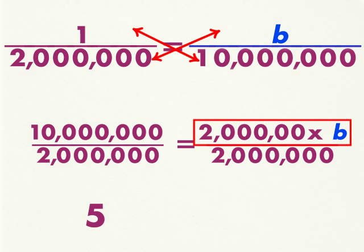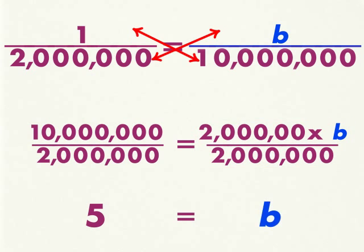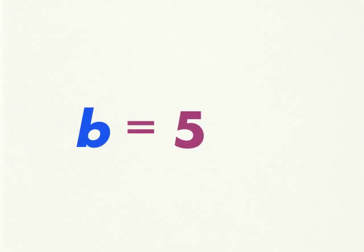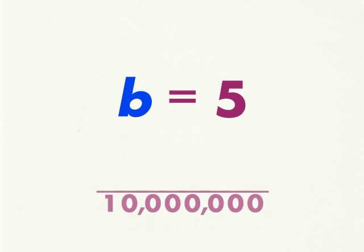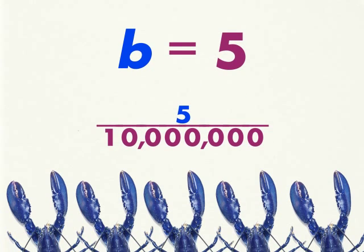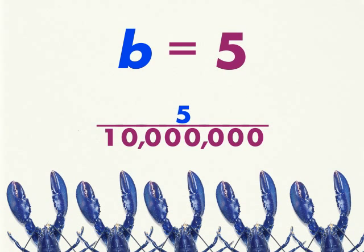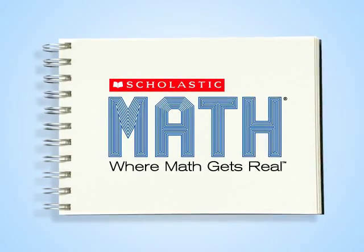2 million times b, divided by 2 million, leaves you with b. So b equals 5. This means that you can predict that out of 10 million lobsters born, only 5 lobsters will be brilliantly blue.